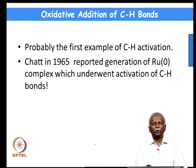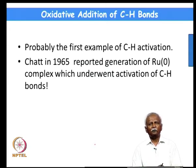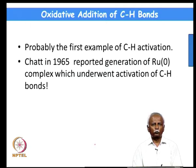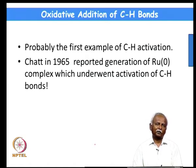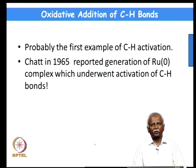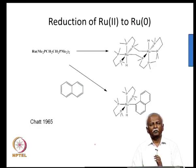This is a good example which tells us that C-H bond activation is difficult, but nevertheless it is not impossible. Let us proceed to the next way of C-H bond activation — oxidative addition of the C-H bond. Probably the first example of C-H activation by oxidative addition was carried out close to Shilov's work as early as 1965. This was done by Chatt, who reported the generation of a ruthenium 0 complex which underwent C-H activation.